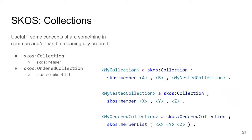Besides concept schemes, there is another class called collection. Basically, you can group a set of concepts in a collection without having to define a concept scheme for them — it is another view of a group of concepts. A collection can be ordered or unordered. If you have an unordered collection, you can use the SKOS member predicate to point to the concepts belonging to this group. If you have an ordered collection, use member list, and the member list is the RDF list — the linked list from the RDF data model — and you can define an ordering among the members.